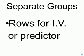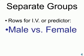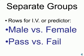The rows are usually reserved for an independent or predictor variable, such as the group of males versus the group of females, or pass or fail a test.